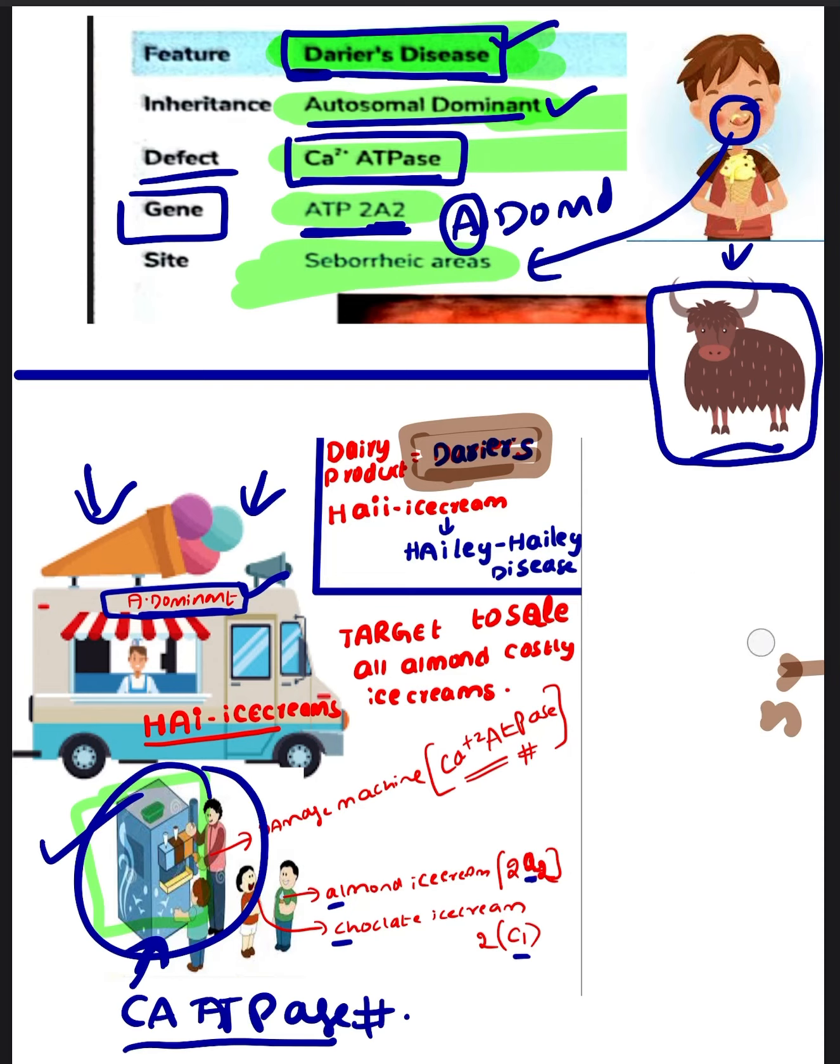Now, a small recap about Hailey-Hailey and Darier's diseases. Both are autosomal dominant conditions. A quick reminder for autosomal dominant conditions: I keep the mnemonic as a truck, a big truck with ice cream loaded. So these are autosomal dominant conditions. For Hailey disease also, it's an autosomal dominant condition only.